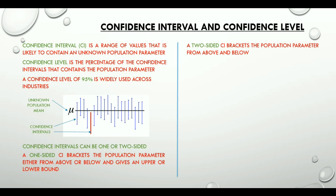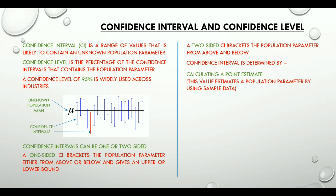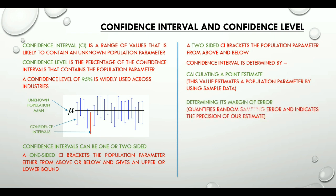We can determine confidence interval by calculating a point estimate. This value estimates a population parameter by using sample data and by determining its margin of error. Margin of error quantifies the random sampling error and indicates the precision of our estimate.